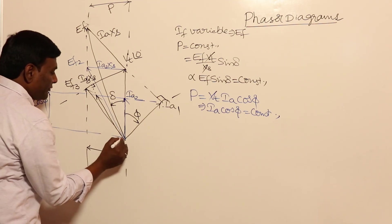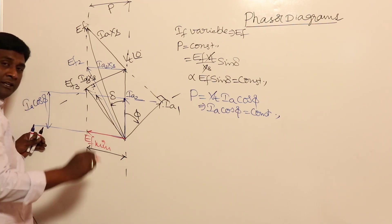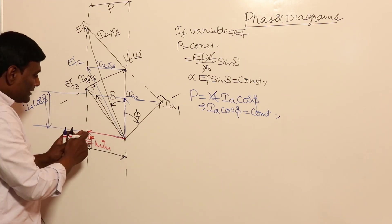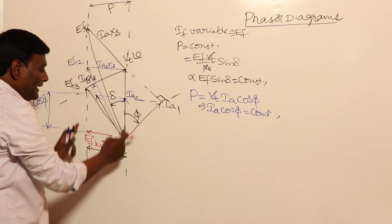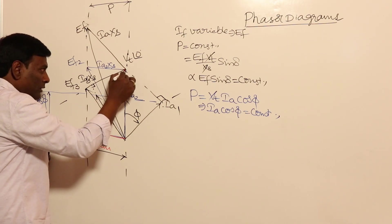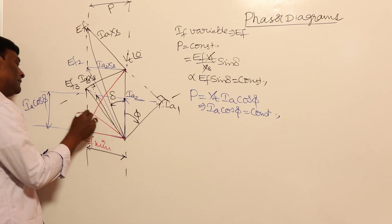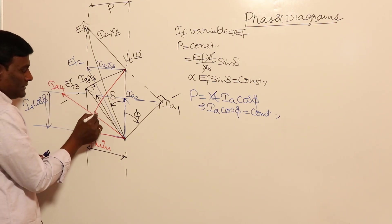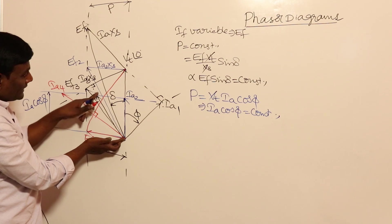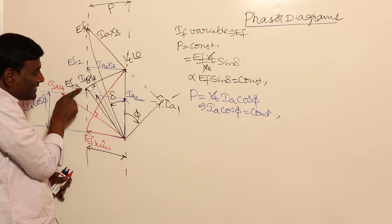If EF is reduced to EF minimum — where EF minimum equals EF sin delta — and Ia4 is found 90 degrees to the corresponding Ia excess axis, then Ia1 cos φ1 = Ia2 cos φ2 = Ia3 cos φ3 = Ia4 cos φ4. Active power at each of these points is the same.